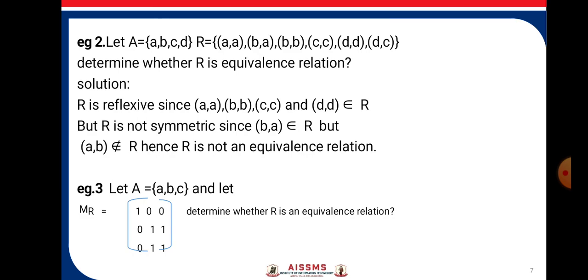Consider the example: set A has elements {A, B, C, D} and relation R is {(A,A), (B,A), (B,B), (C,C), (D,D), (D,C)}. We need to determine whether R is an equivalence relation. R is reflexive since (A,A), (B,B), (C,C), and (D,D) all belong to the relation. However, R is not symmetric since (B,A) belongs to R but (A,B) does not belong to R. Hence R is not an equivalence relation.